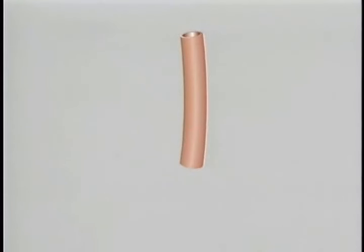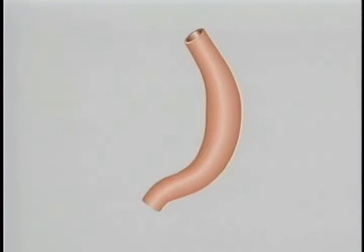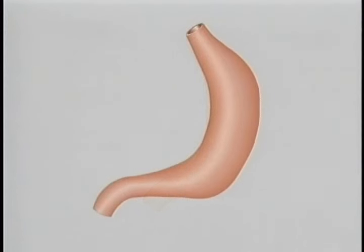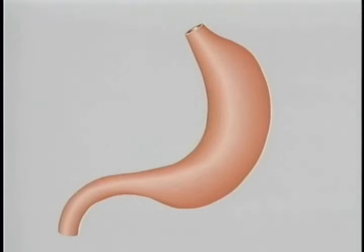The foregut starts as a straight tube. As it develops, it rotates on its long axis, lengthens in a double curve, and expands to become the stomach and the first part of the duodenum.